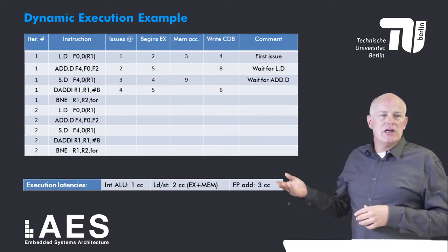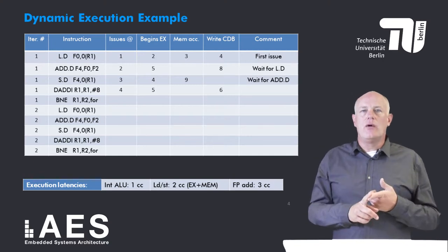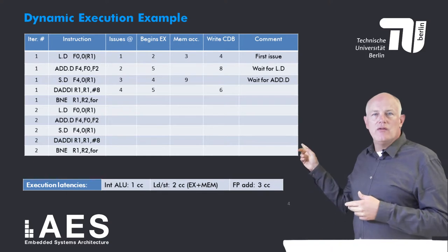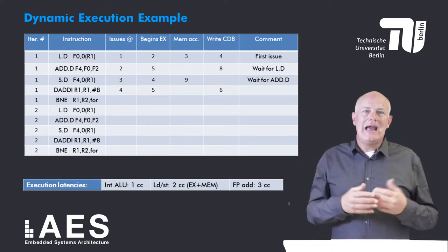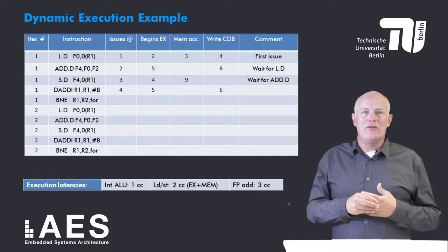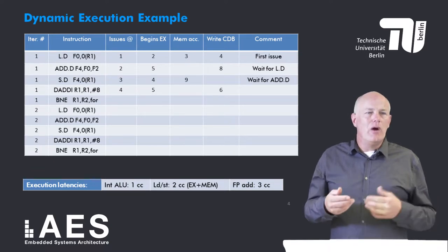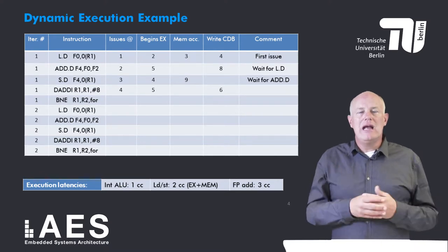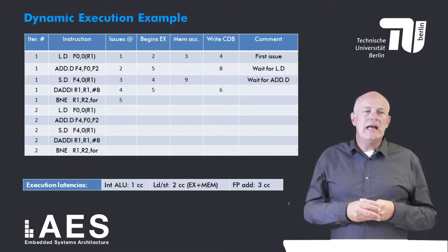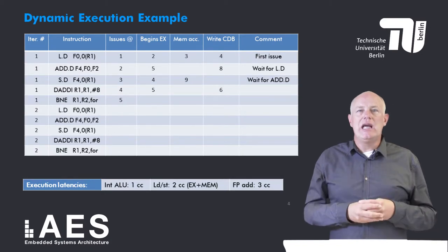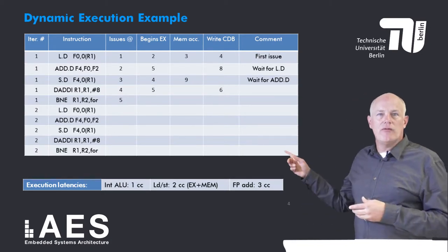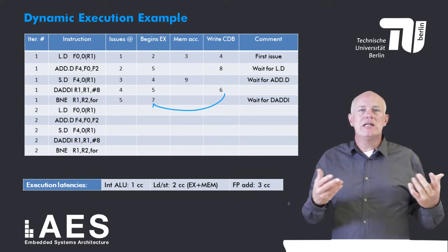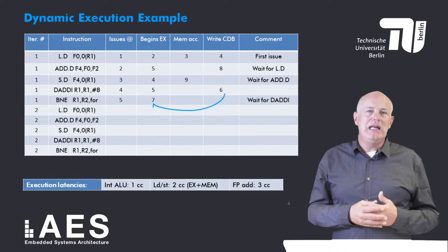The add immediate is issued in clock cycle 4 and starts executing in clock cycle 5. Notice that there is no structural hazard with the preceding add double because they are executed on different functional units. The add immediate writes its result onto the common data bus in clock cycle 6. The next instruction is the branch not equal. It is issued in clock cycle 5, but it cannot execute until clock cycle 7 because it has to wait for the preceding add immediate to complete.